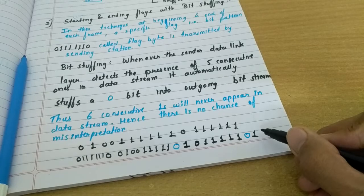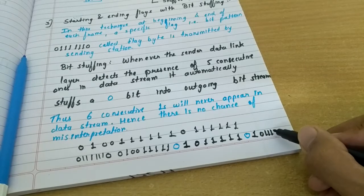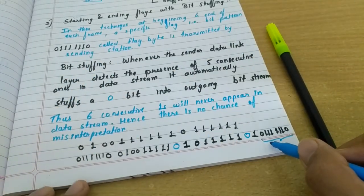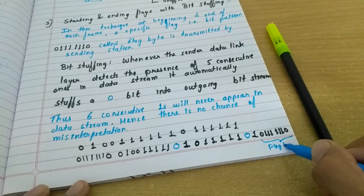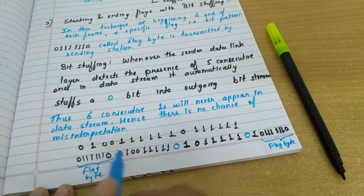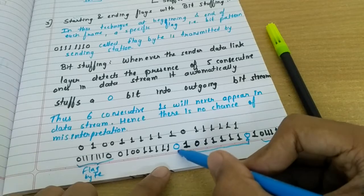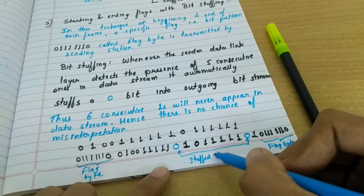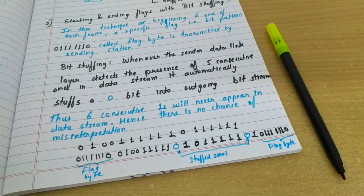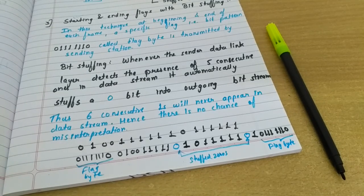After the second run of six ones, another zero is stuffed in. The frame ends with the closing flag byte 01111110. The two inserted zeros are called stuffed zeros. This ensures the flag byte pattern never appears in the data, and in practice we use a combination of these methods together.